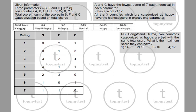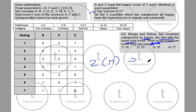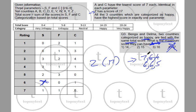Question 3: Countries B and D are both categorized as 'happy' and tied with the same score. What is the maximum score they can have? We know Z has 17 using either 7+6+4 or 6+6+5, and Z takes one of the sixes in S. For B and D to both score 16, each would need at least one 6, but with only one 6 remaining after Z's allocation, 16 is not achievable for both.